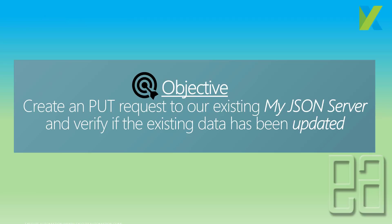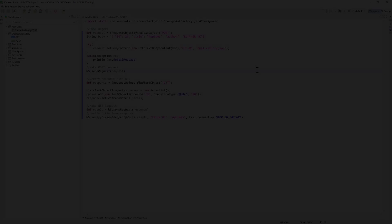The objective of this video is to create a PUT request to our existing JSON server and verify if the existing data has been updated. We've already created the infrastructure for working with the JSON server in previous videos, so we'll just be creating a new test case and verifying the PUT request.